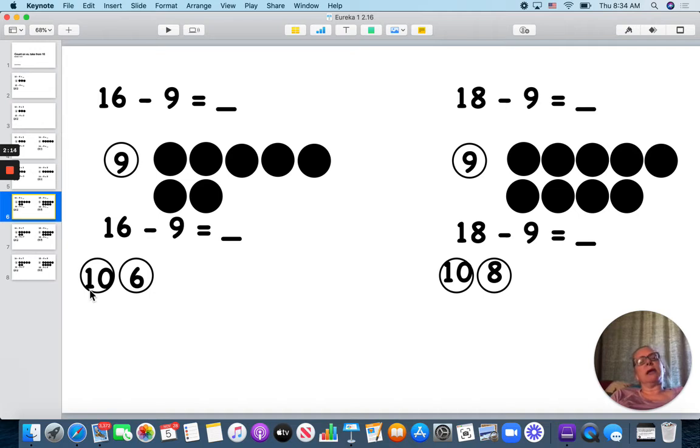But if I take from 10, I'm going to break my 16 into 10 and 6. When I take 9 away from 10, I get 1. 1 and 6 is 7. So, 16 minus 9 is 7.